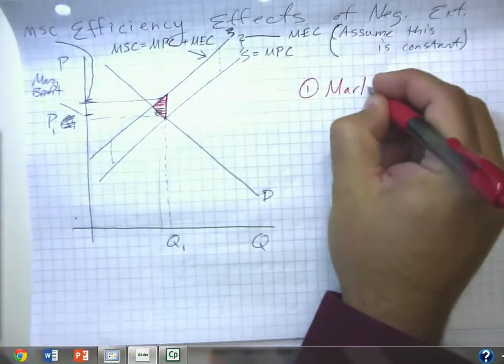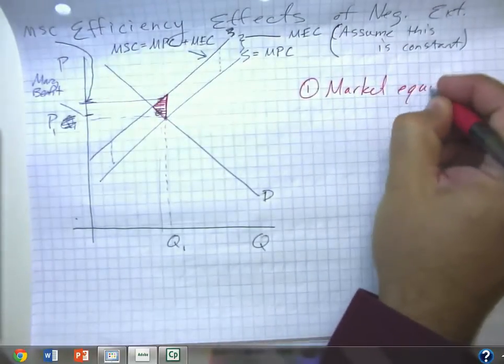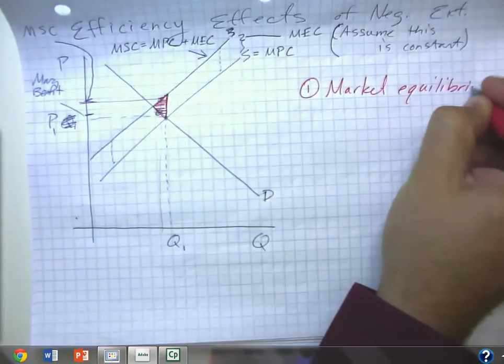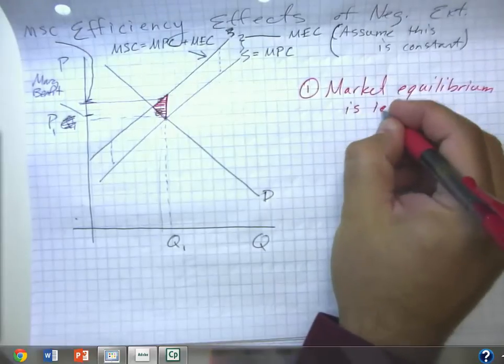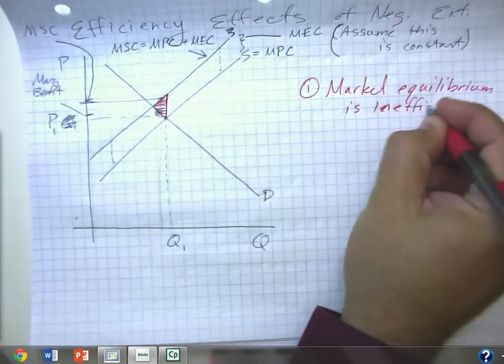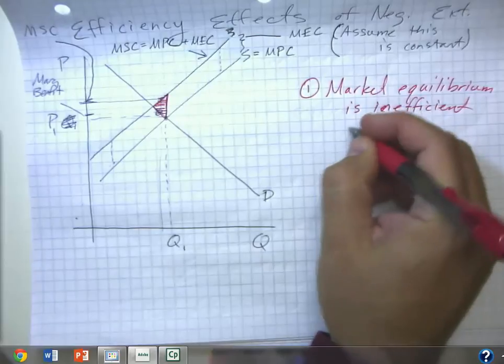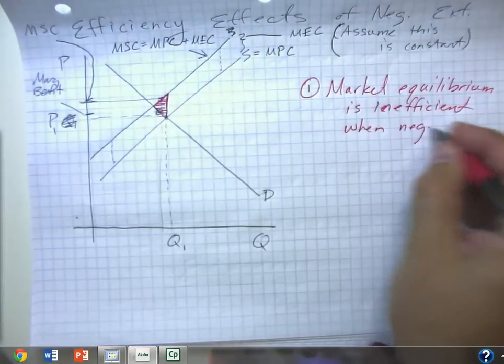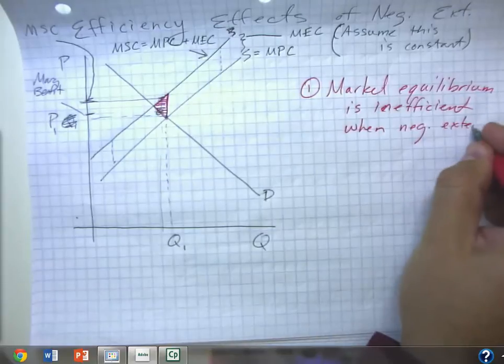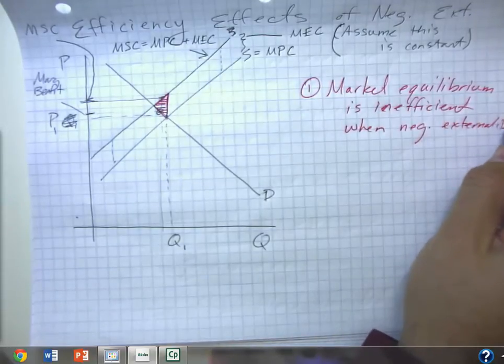So one, the market equilibrium, we could say the unregulated market equilibrium, is inefficient when there is a negative externality.